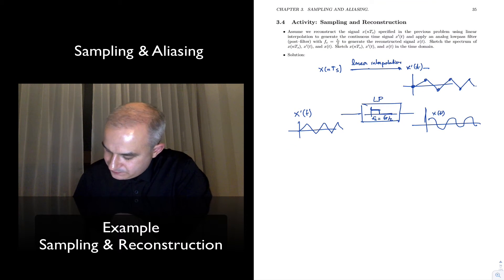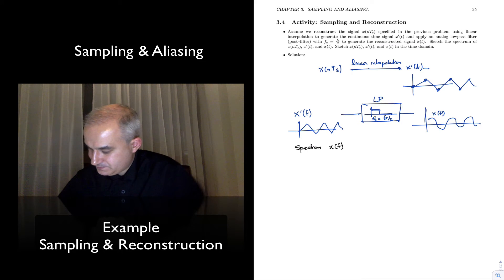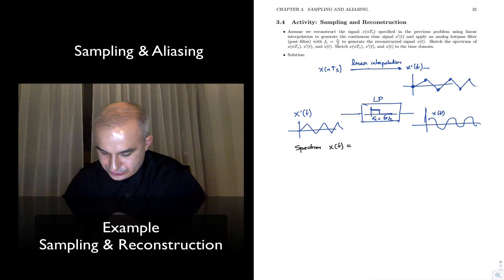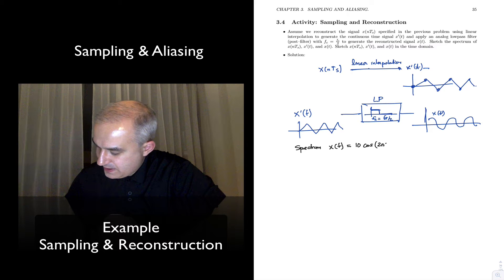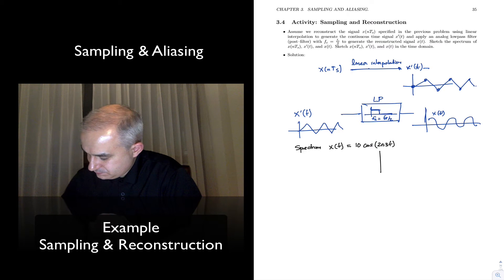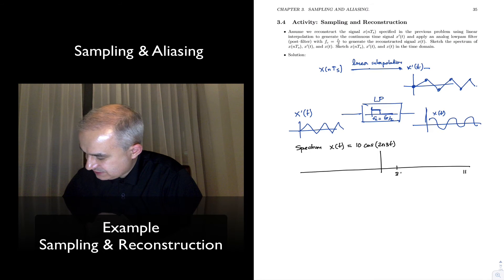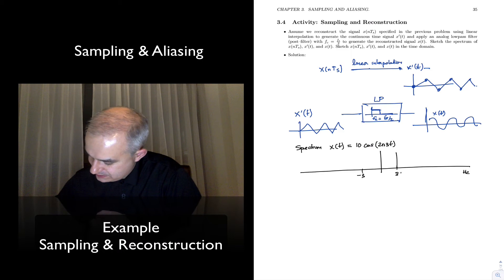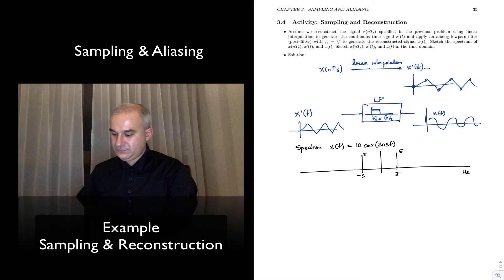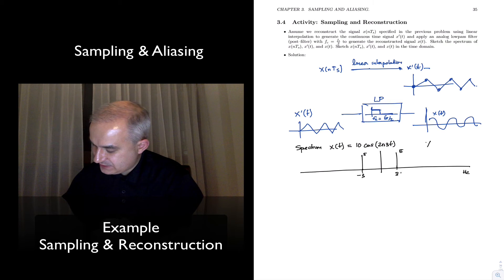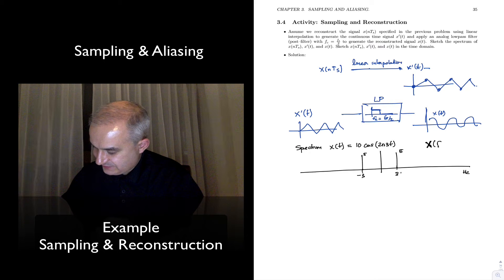Let's look at the spectrum. First of x(t), the original one. Remember, x was 10 cosine of 2π·3t. So the spectrum has a spectral line at 3 Hz and at minus 3 Hz. This is one-half the amplitude — so 5 and 5. We are going to use capitals to denote the spectrum as a function of frequency.